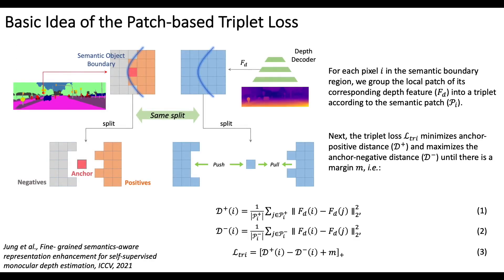We settle this problem through patch-based triplet loss. The triplet loss pushes the negatives away and pulls the positives close until there is a margin in the Euclidean distance difference between the positives and the negatives.